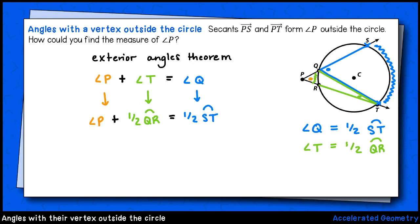Putting this all together, I have the orange angle P outside the circle plus one-half arc QR equals one-half arc ST. Now, remember, we're looking for the measure of angle P, so let's solve this equation for the orange angle P. I'll subtract one-half QR from both sides of the equation, and we have P equals one-half arc ST minus one-half arc QR.